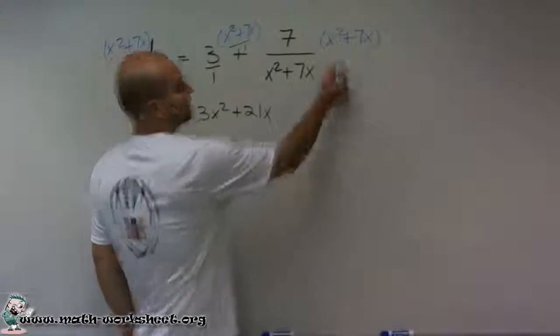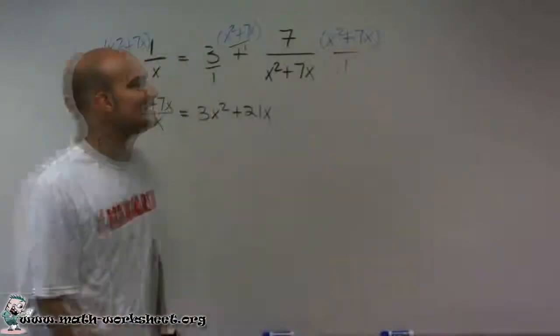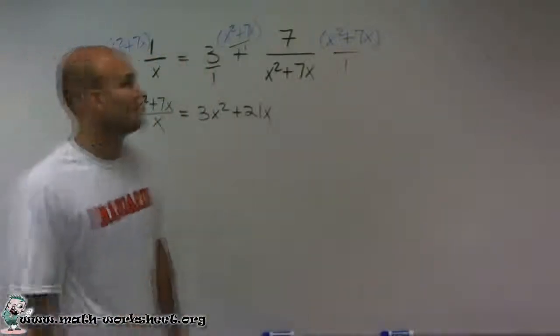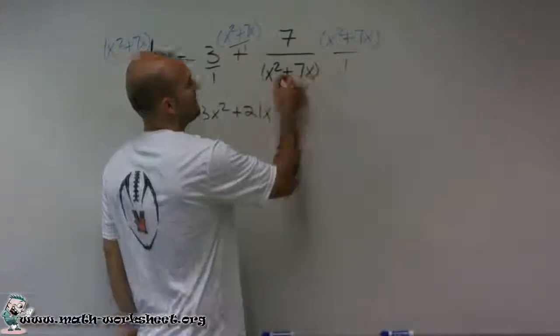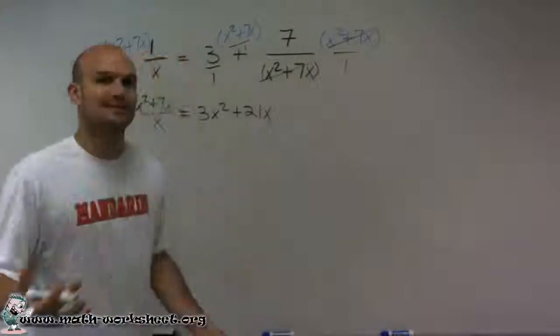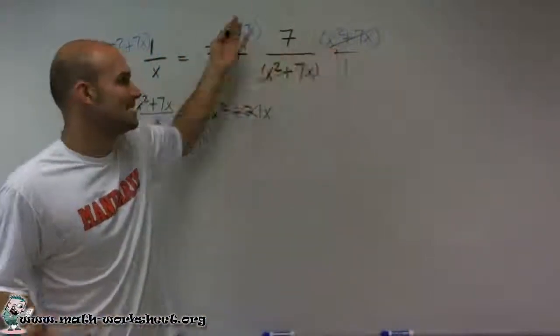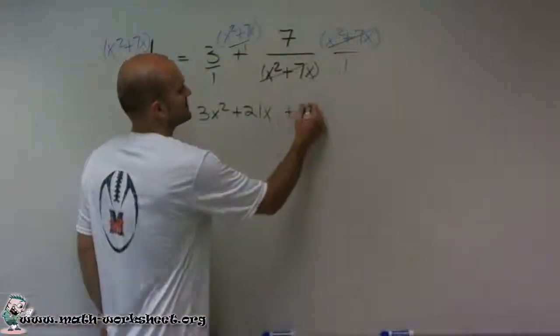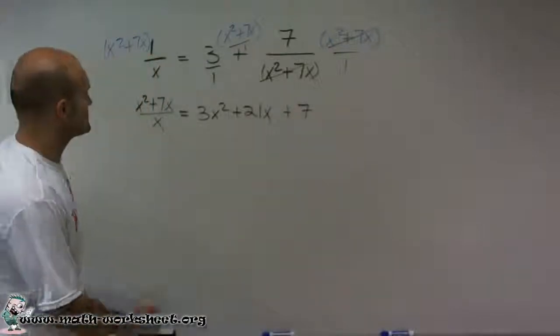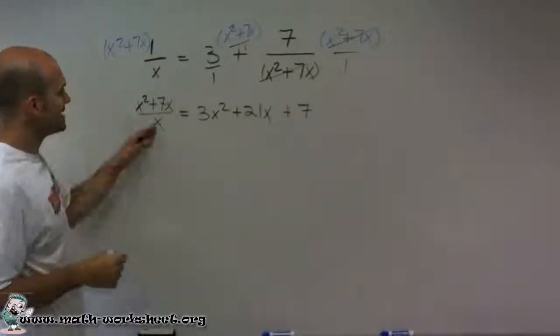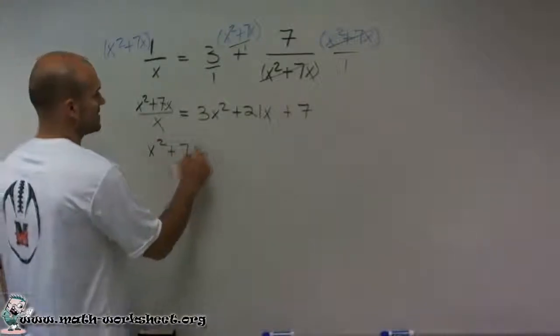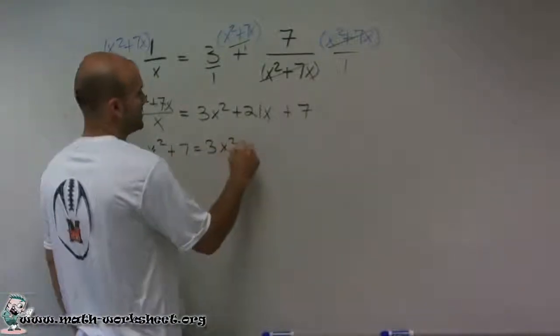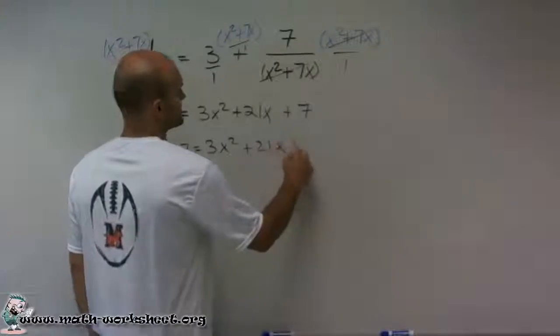Then over here, again, as I said, you can rewrite that as x squared plus 7x divided by 1. Well, when you multiply this across, what you notice is these are going to cancel, not really cancel, but they divide into 1. And 1 times 7 is just going to leave you with a 7. So as we look at this, we notice that x divides into both of these terms, leaving me with x squared plus 7 equals 3x squared plus 21x plus 7.